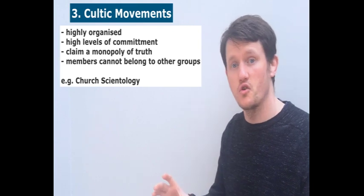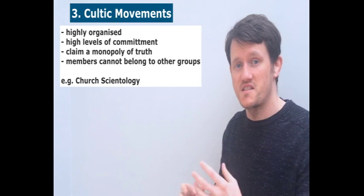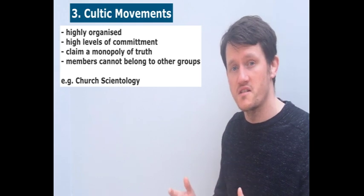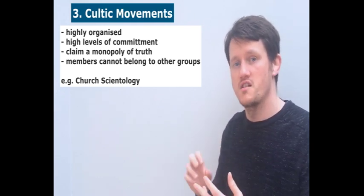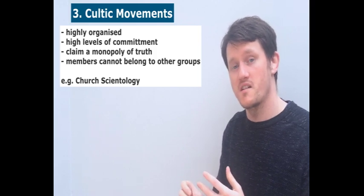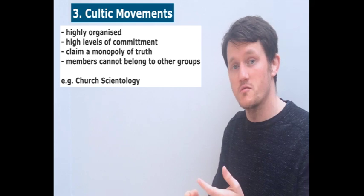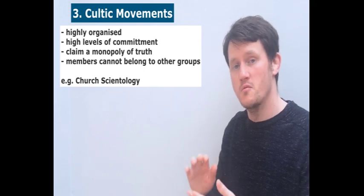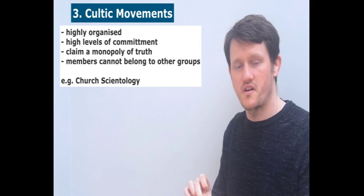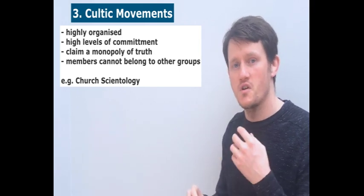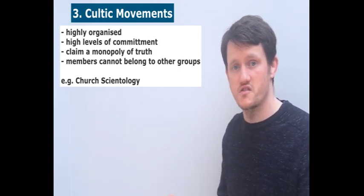The final type of cult is called a cultic movement. Cultic movements actually seek to transform every aspect of a person's life, so they sound almost more like a sect. They require high levels of commitment and seek to transform all aspects of someone's life. They have much larger memberships and are more formally organised, more likely to have a strict charismatic leader. An example for Stark and Bainbridge would be the Church of Scientology.